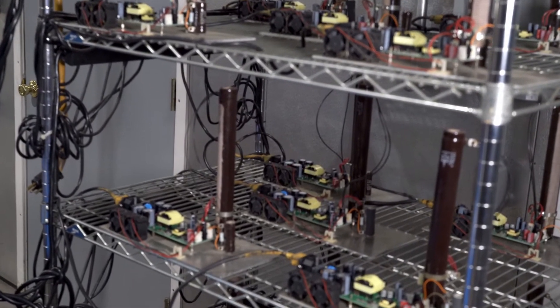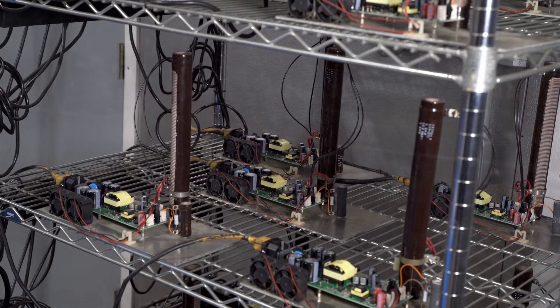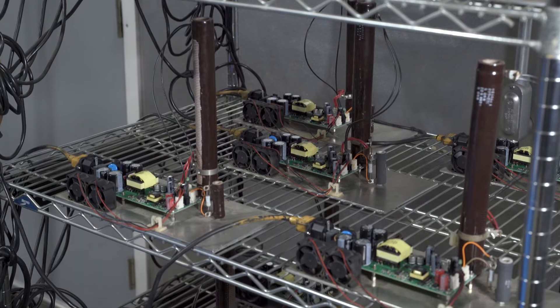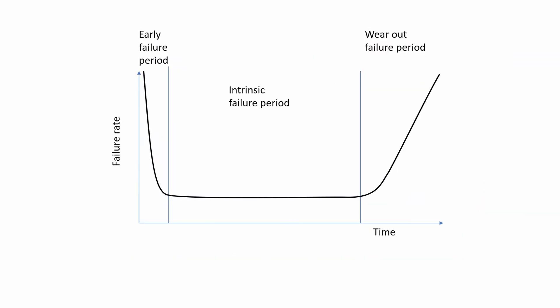Today we're going to look at the role of burn-in in the electronics design and manufacturing process. The first thing you need to know about is something called the bathtub curve. This is well-known in engineering as the shape of the failure rate over time for most products.